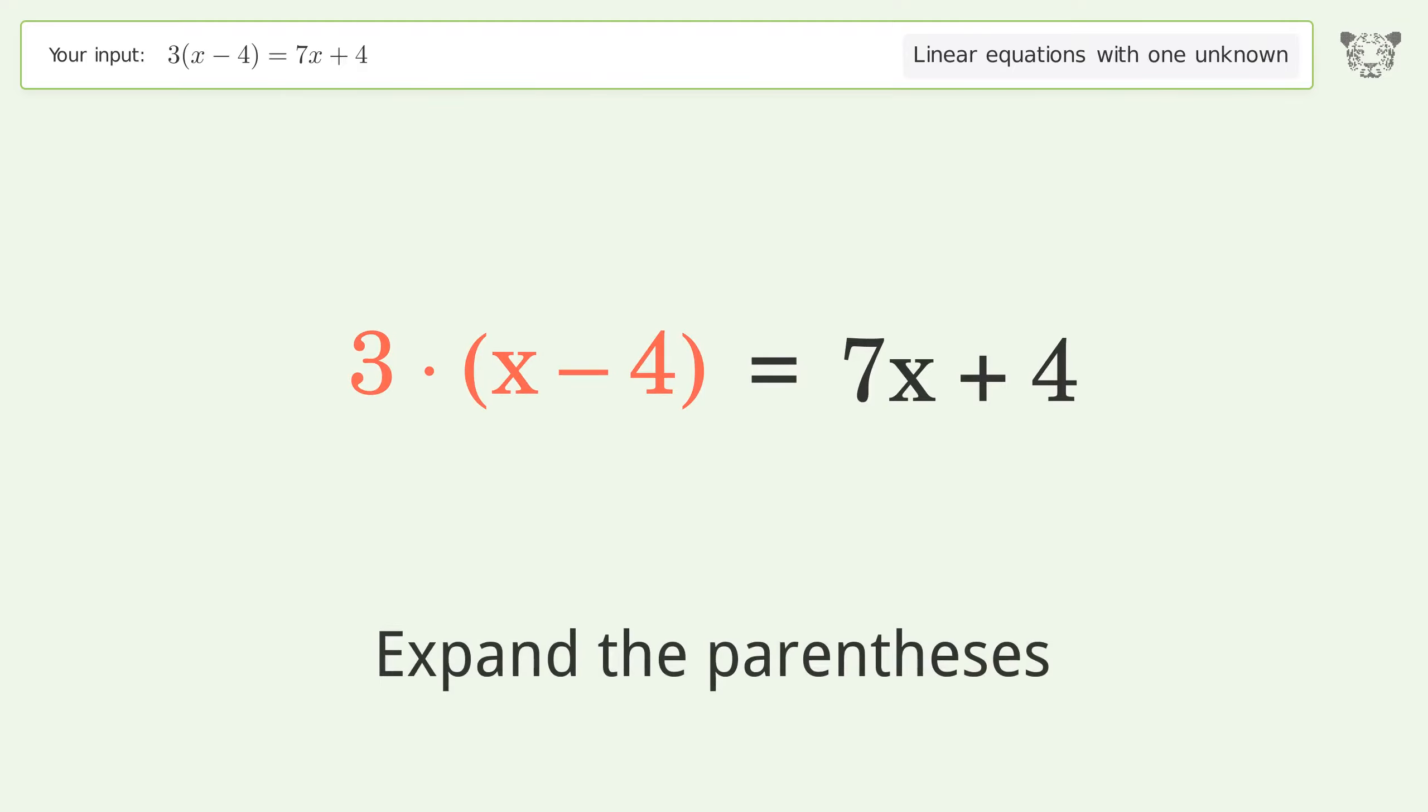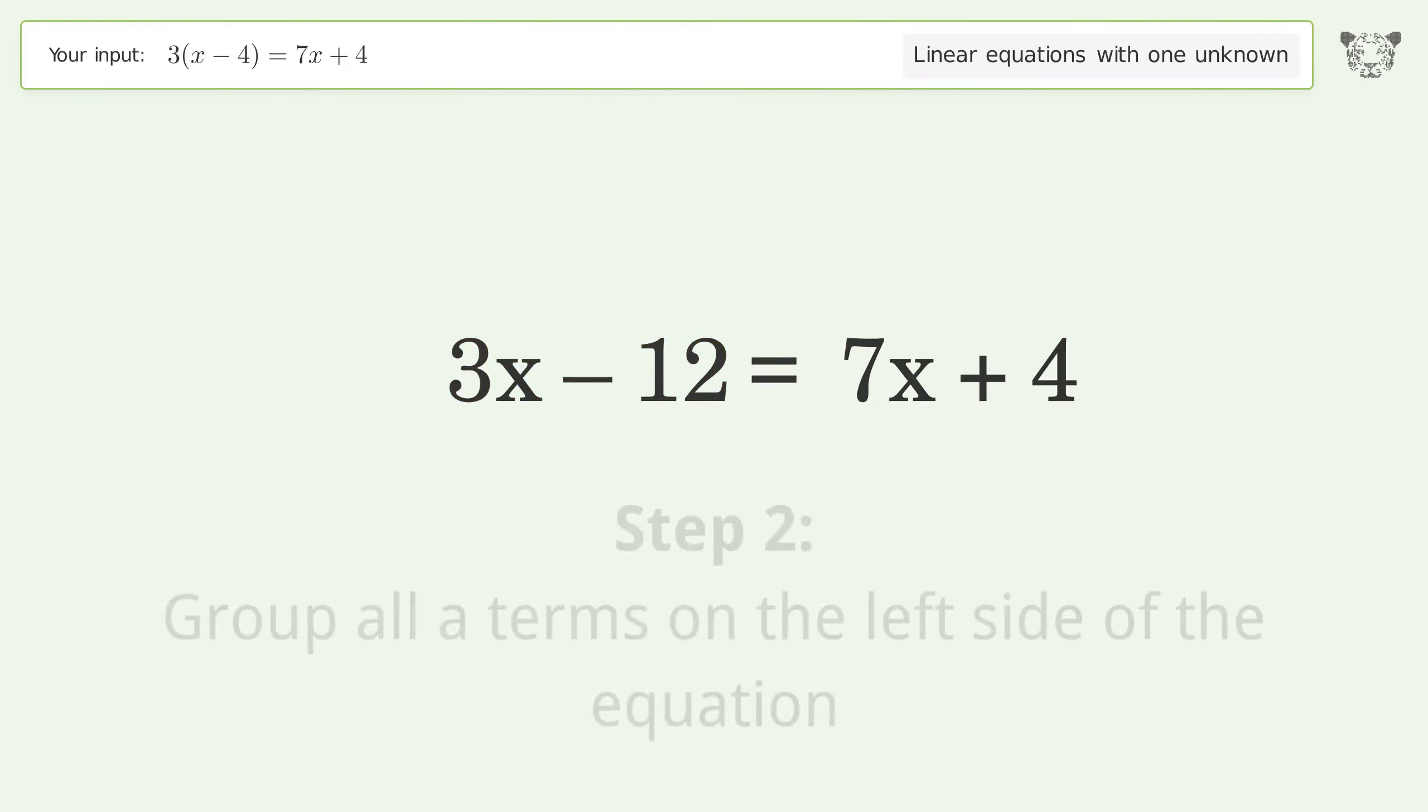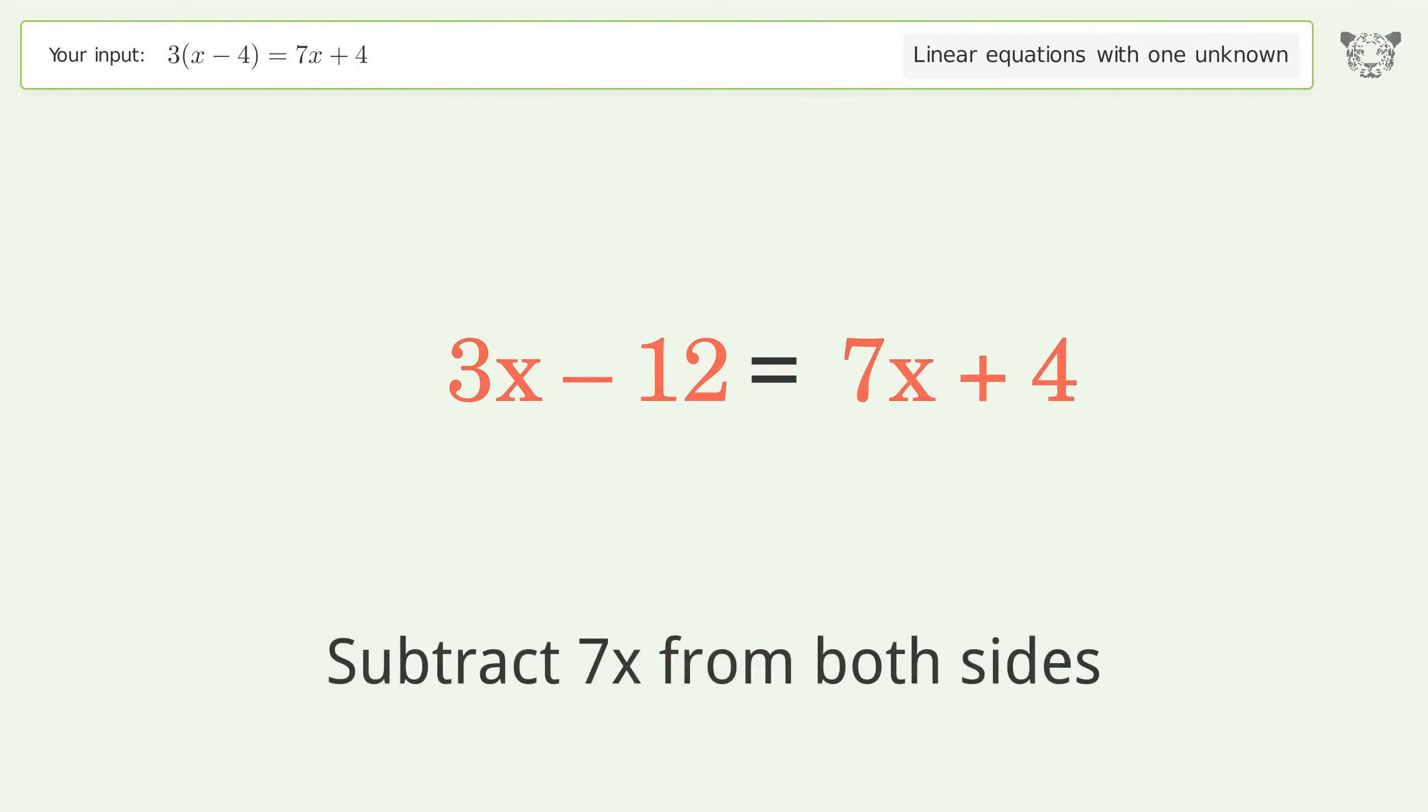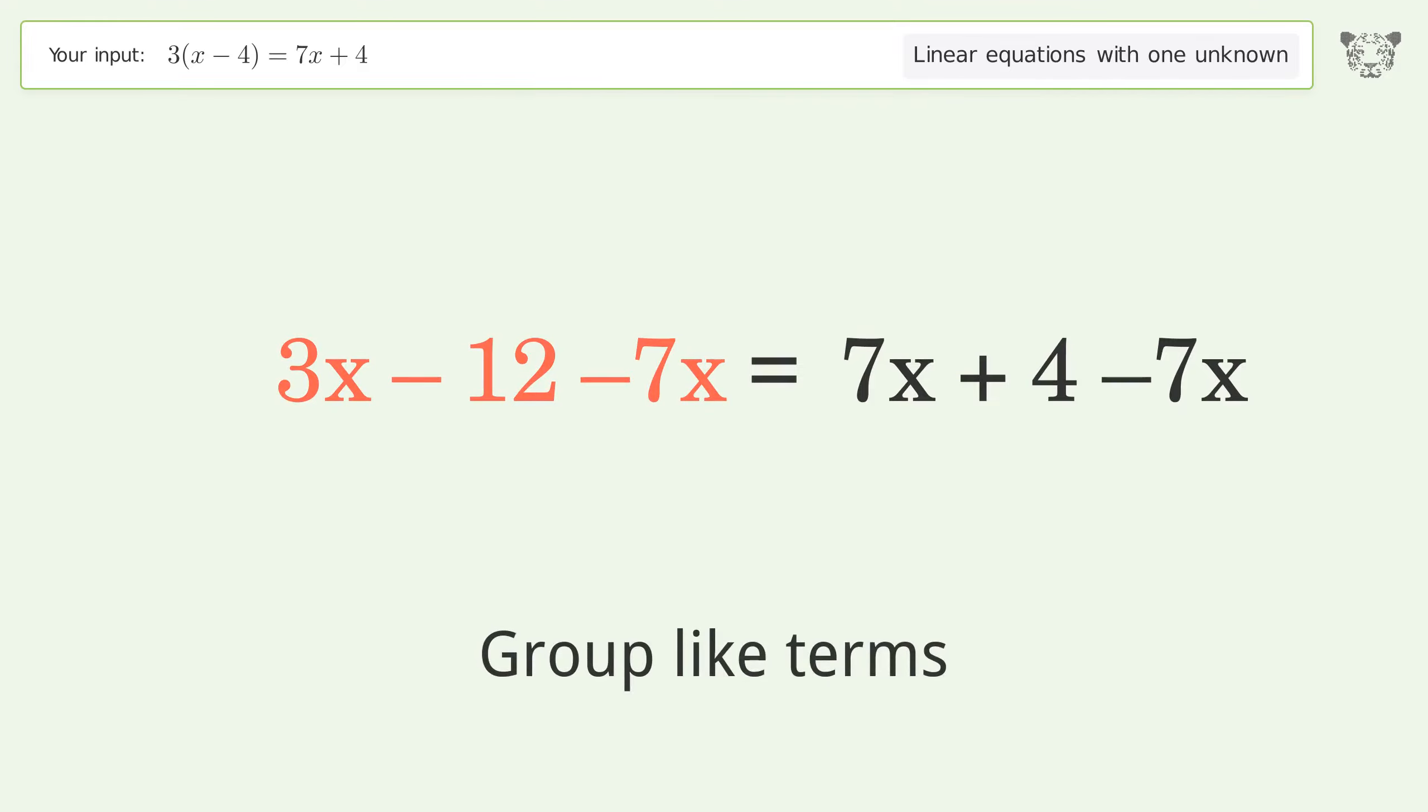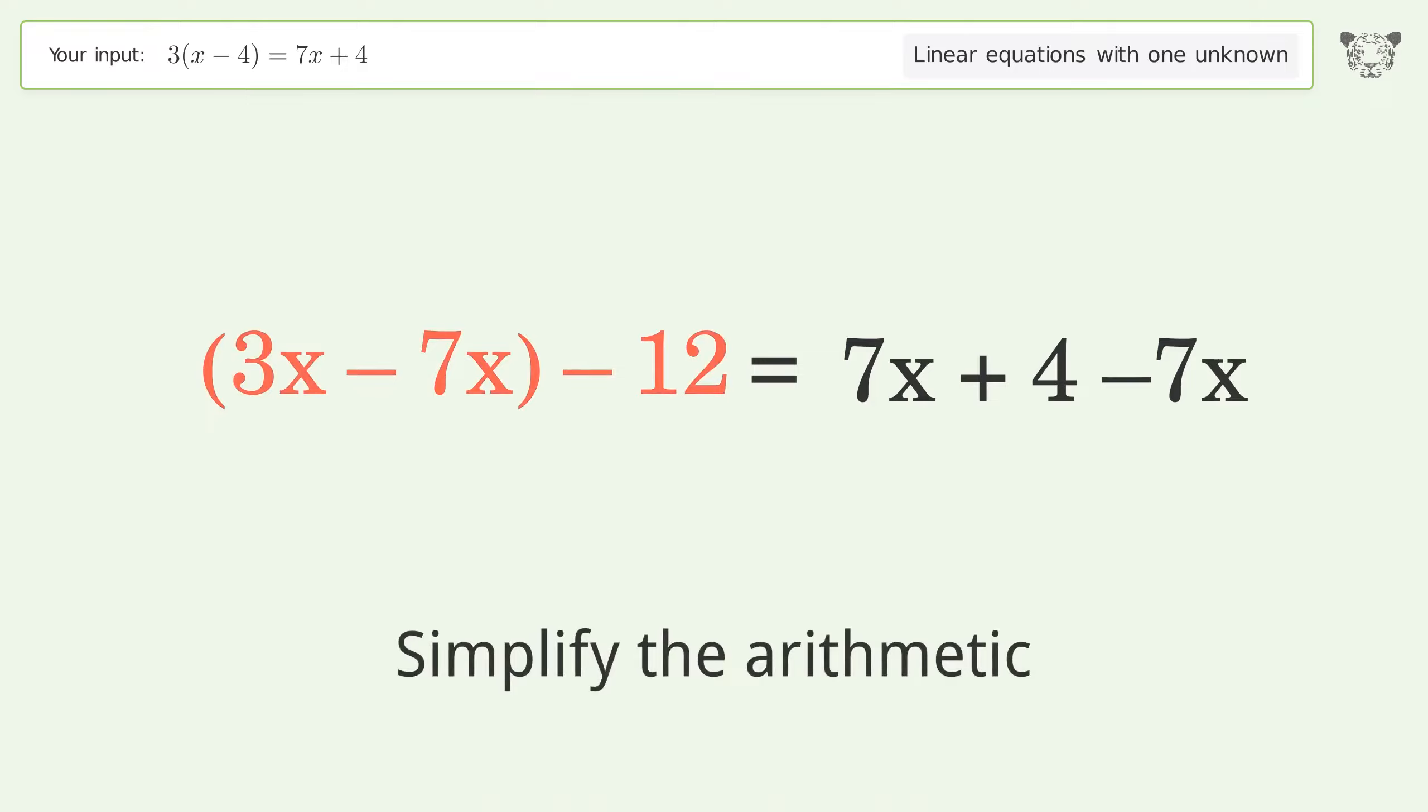Expand the parentheses and simplify the arithmetic. Group all x terms on the left side of the equation by subtracting 7x from both sides. Group like terms and simplify the arithmetic.